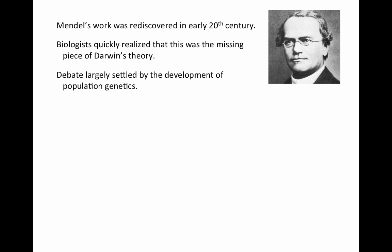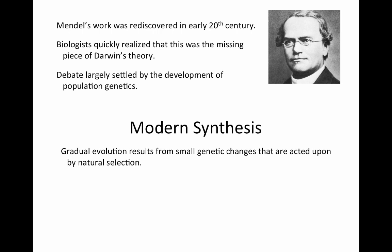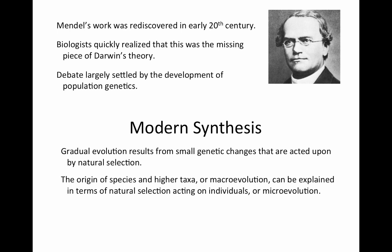The newly developing field of population genetics allowed researchers to actually measure changes in allele frequency under selection — change over time due to selection is now an observable fact. The marriage in the 20th century between Darwinian natural selection and Mendelian genetics is called the modern synthesis, which really completed Darwin's theory. The major conclusions of the modern synthesis are: gradual evolution results from small genetic changes acted upon by natural selection, and the origin of species and higher taxa — macroevolution — can be explained in terms of natural selection acting on individuals at the microevolutionary level over large periods of time.